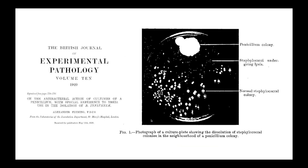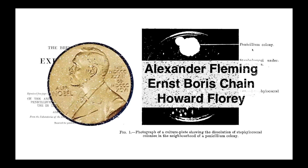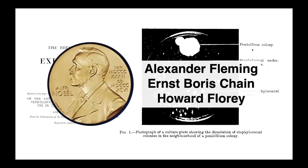Of course, this all changed when Alexander Fleming made his famous discovery. This is an image from his original paper. You can see this penicillium colony — this mold — and staphylococci surrounding this mold. What he was astute enough to observe is that the staph which were growing in close proximity to that colony were undergoing lysis, and he realized that this penicillium mold must be producing something which had a negative effect on the bacteria, which of course went on to become penicillin. For this discovery, along with Ernst Chain and Howard Florey, Alexander Fleming was awarded the Nobel Prize.